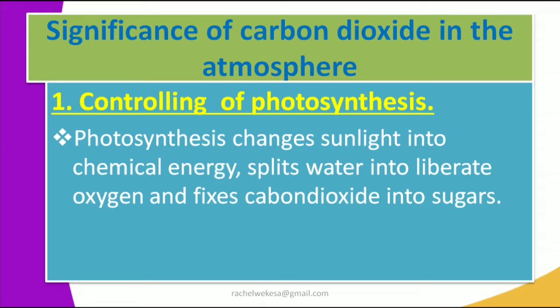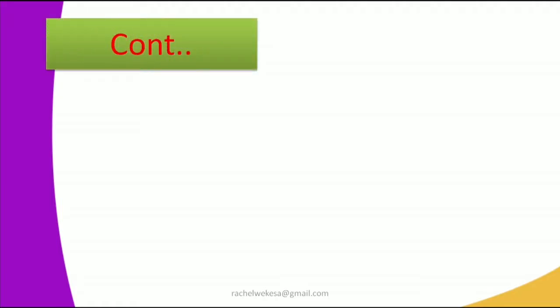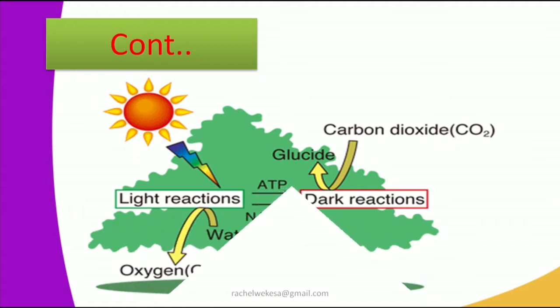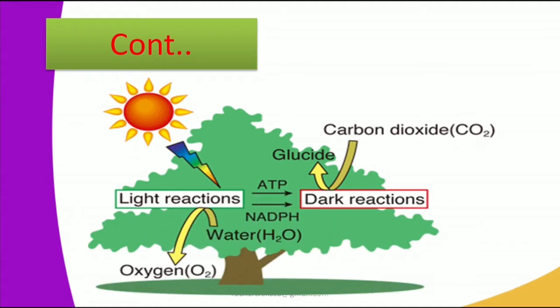Through sunlight, chemical energies are split — the sunlight changes the chemicals into energy, then splits the water and fixes carbon dioxide into sugar. This image explains this process: you have the sun changing chemicals into energy, the water being broken down, and the carbon dioxide fixed into sugars, all helping the plants to make their own food.